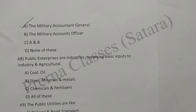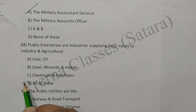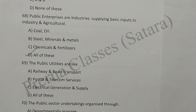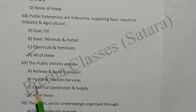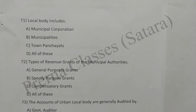Question 68: Public enterprises are industries supplying basic inputs to industry and agriculture — coal, oil, steel, minerals, metals, chemicals, fertilizers, and all of these. Option D is correct. Question 69: Public utilities are like railway, road transport, postal, telecommunication services, electrical generation and supply, and all of these. Option D is correct. Question 70: Public sector undertakings organized through department of management, government company, deemed company, corporation set up under specific act of legislation — A or B or C. Option D is correct.